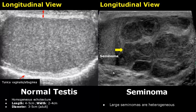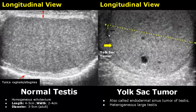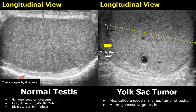A yolk sac tumor is the most common testicular tumor in children and is very rare in adults. It is also known as endodermal sinus tumor of the testis. It presents as a large heterogeneous testis.